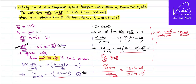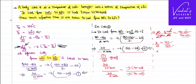After cancellation, the 20s cancel and the minutes cancel, leaving X/10 on the left side. On the right side: (90 - 20) / (70 - 20) = 70/50 = 7/5. So X/10 = 7/5, which gives X = 7 × 2 = 14 minutes. That is the answer.